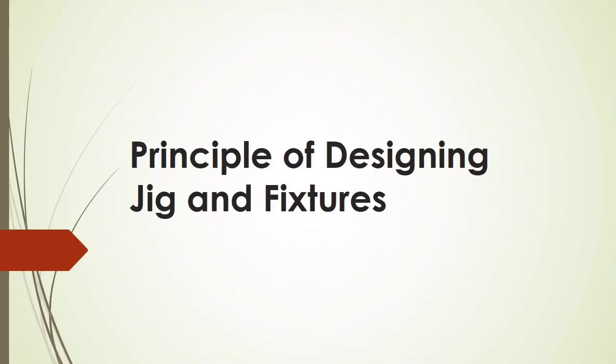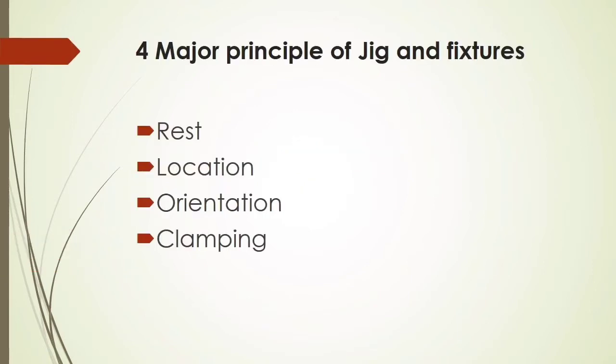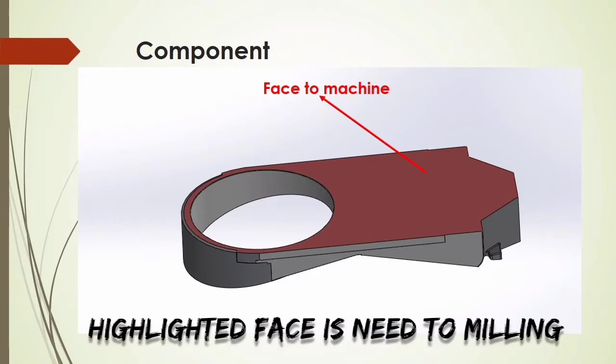Assalamu alaikum friends. In this video, we are going to discuss the principles of designing jigs and fixtures. There are four major principles of jigs and fixtures: rest, location, orientation, and clamping. These are the components we use to design a fixture.